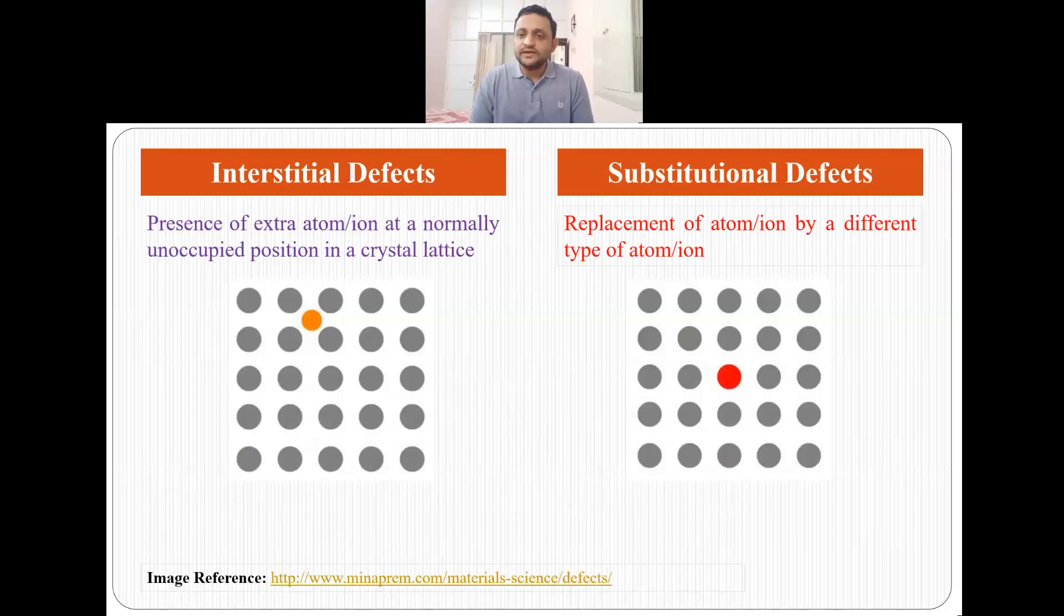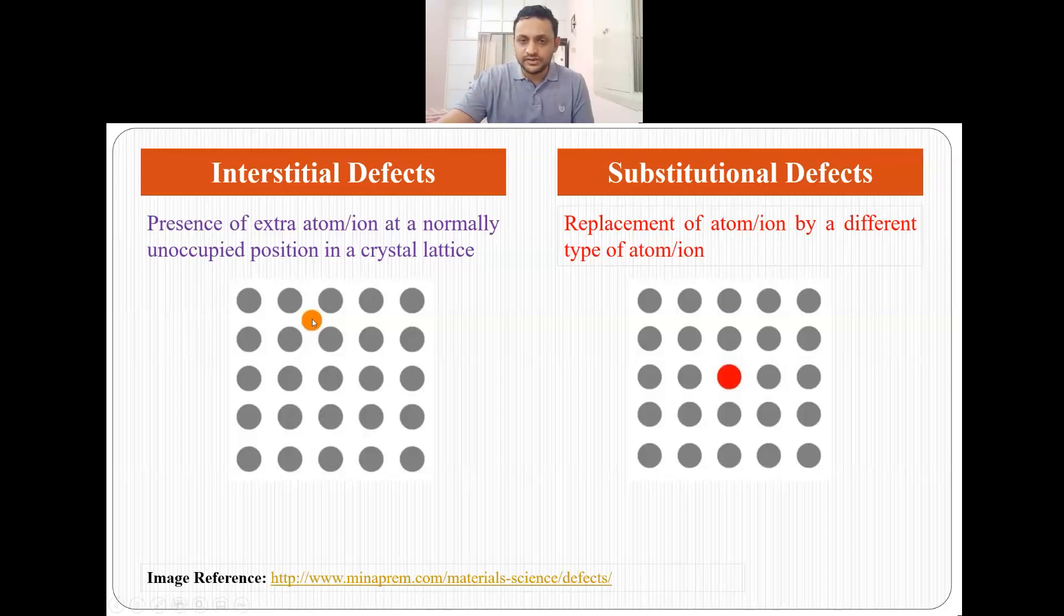Interstitial defects and substitutional defects: if an extra atom or ion is present in a normally unoccupied crystal lattice position, the spaces between atoms, and if by some reason some other atom or ion comes in this position, this is what we call interstitial defects. In substitutional defect, suppose you have a crystal structure of one atom and a particular atom is replaced by a different type of atom or ion, then we say it as a substitutional defect.